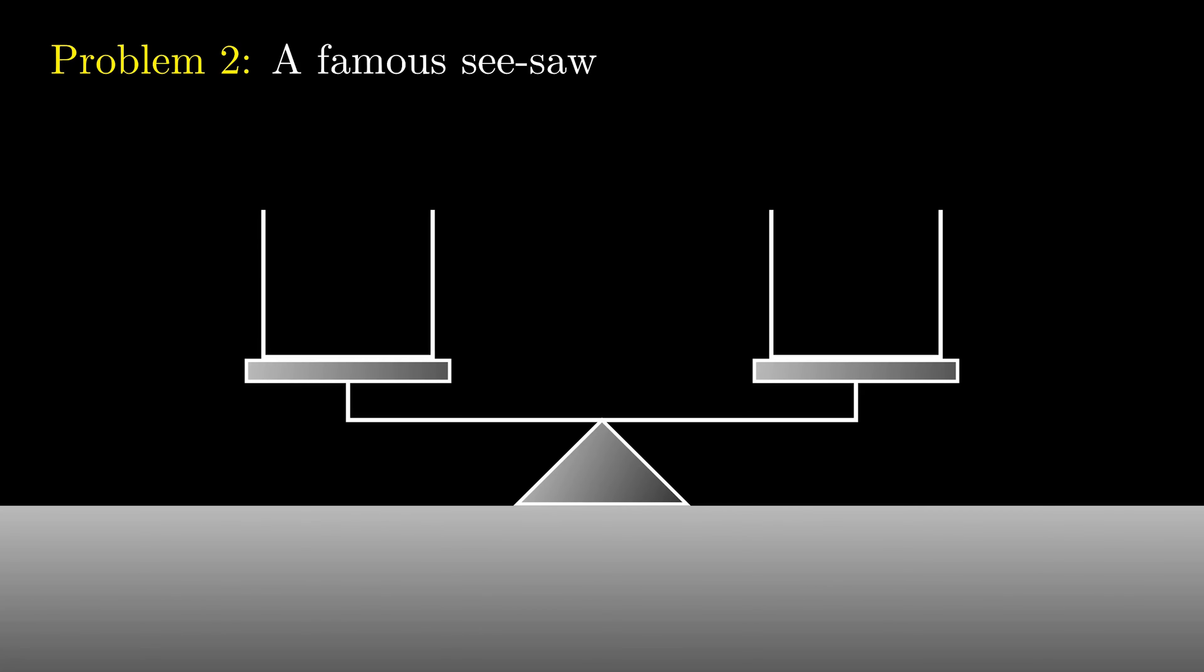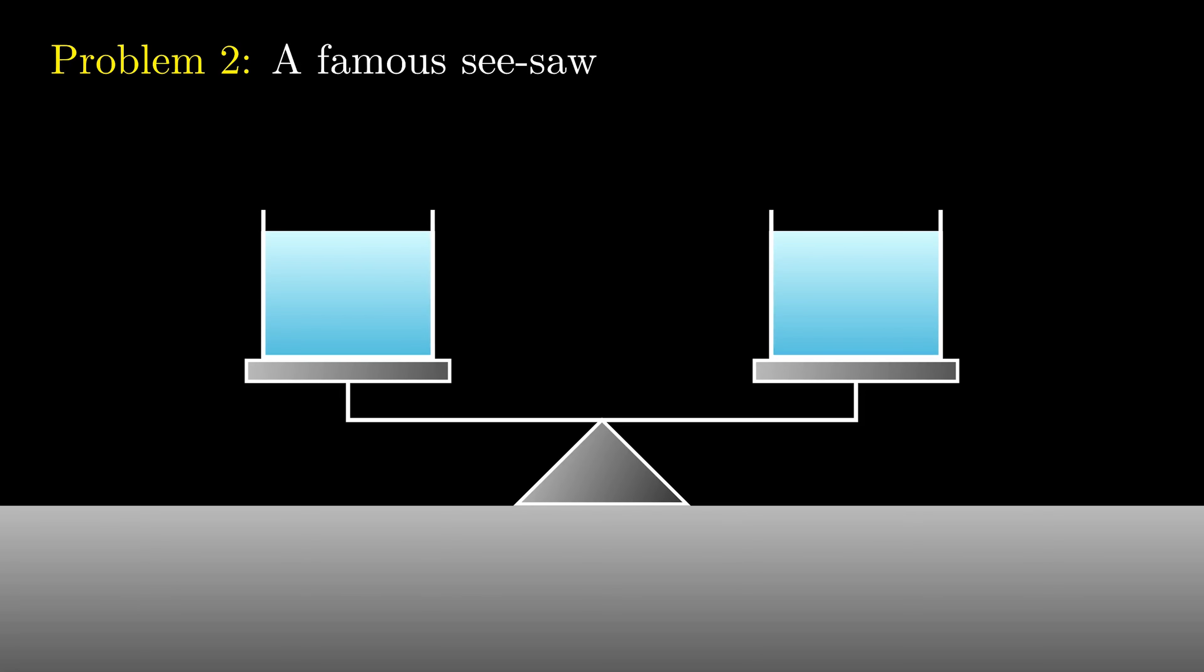We first fill the containers with water to the same water level. Then in the container on the left, we place a ping pong ball, and in the container on the right, we place a rock. The two of them have the same volume.